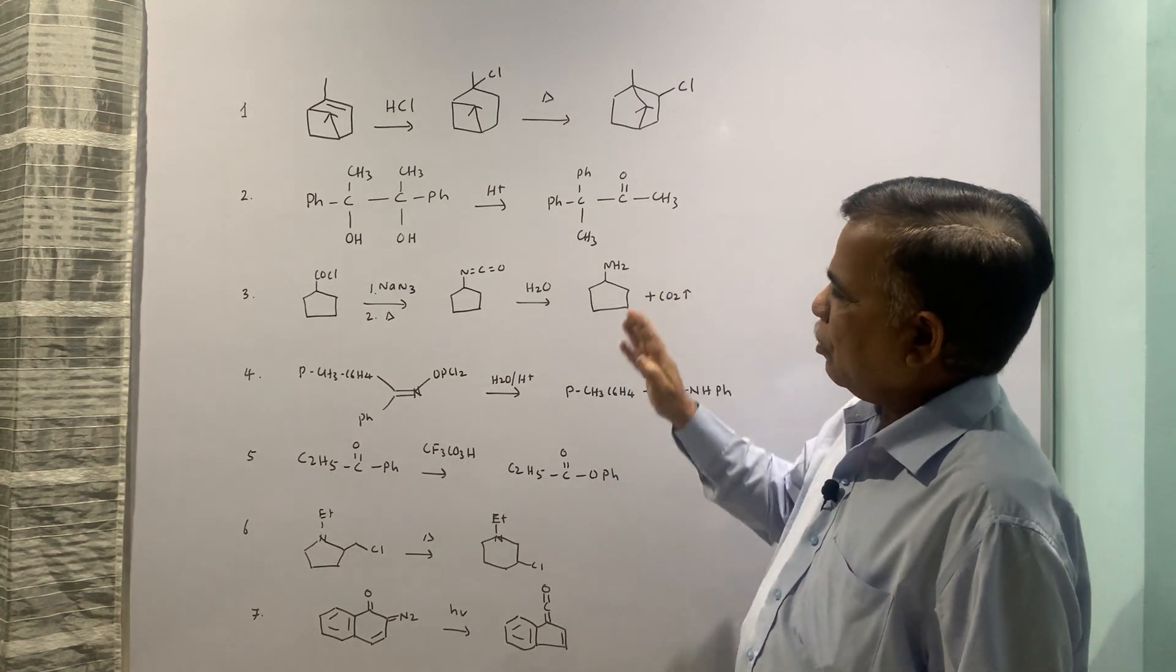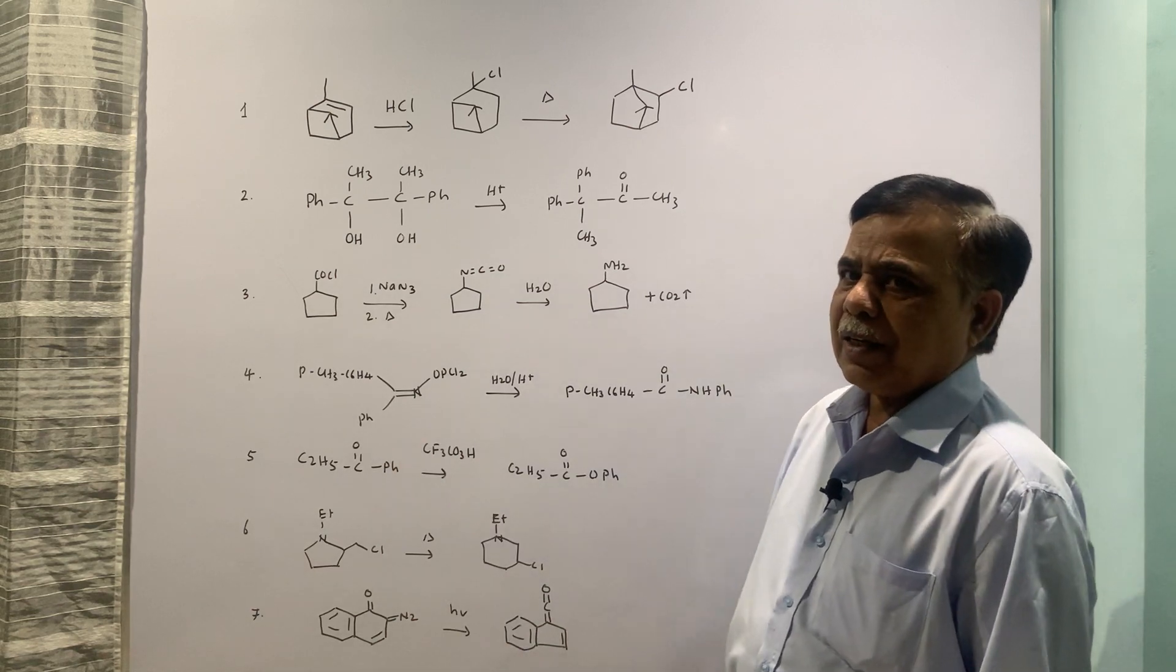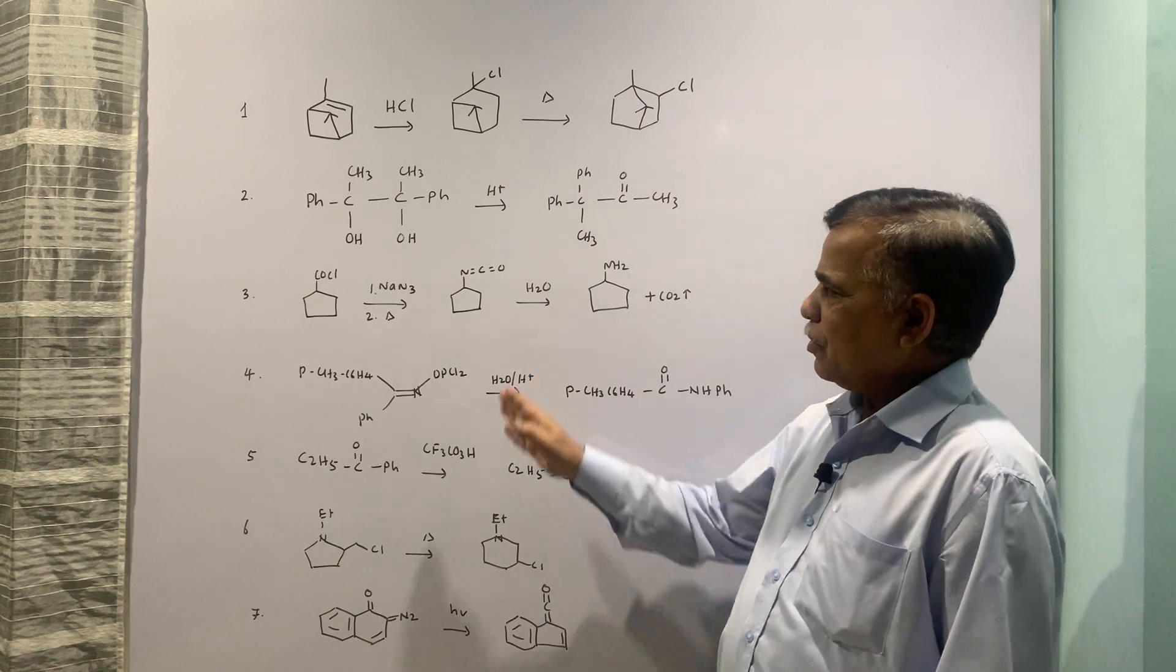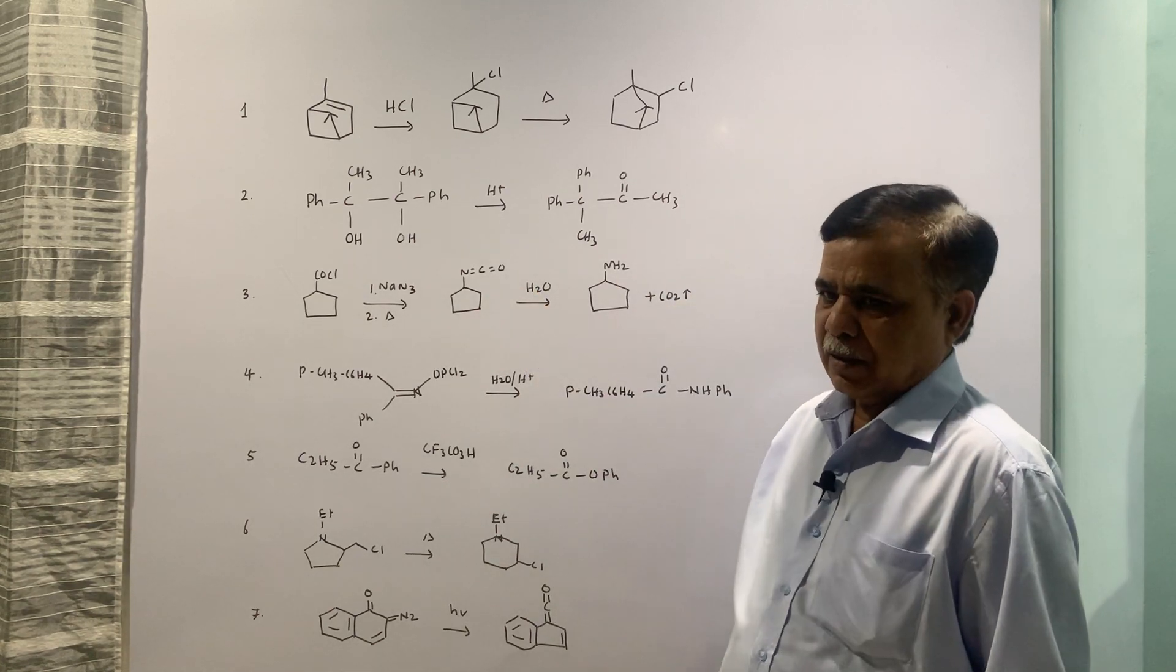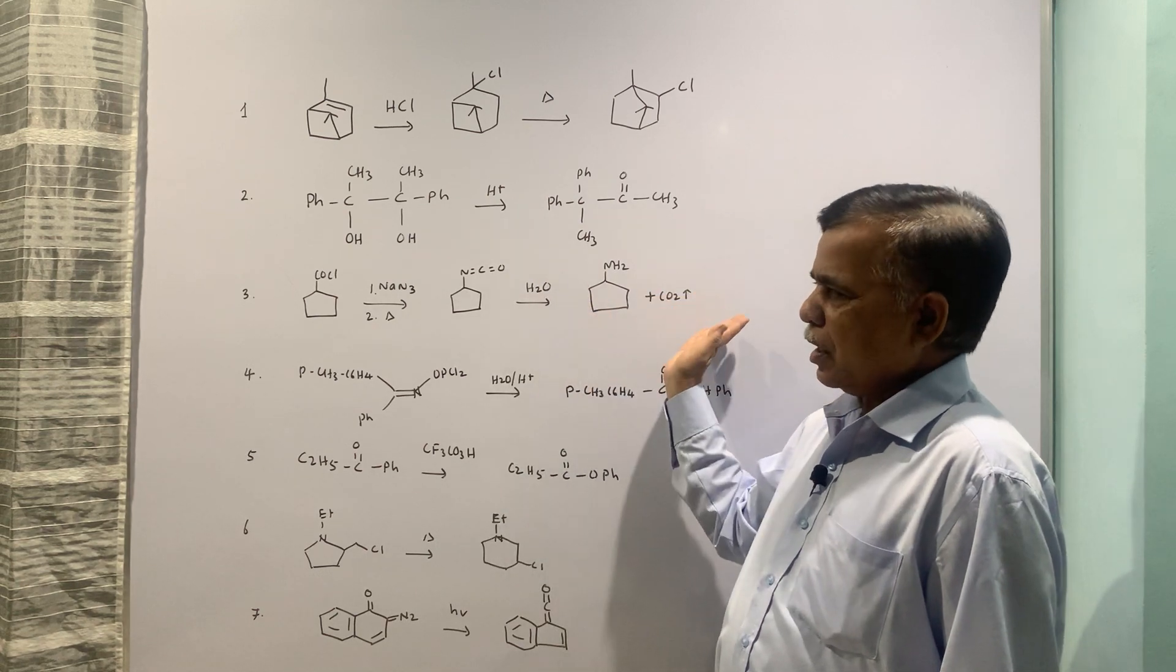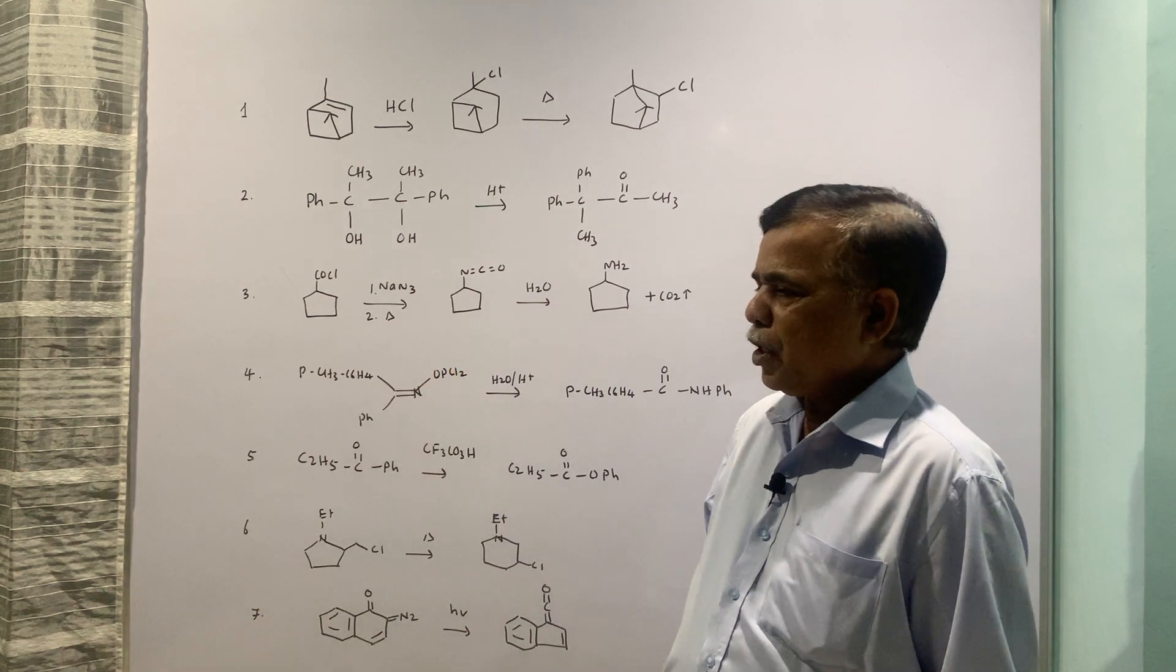This one is acid chloride and azide. So this is going to be your Curtius rearrangement. Isocyanate is there and the workup is same. Isocyanate attacked by water loses carbon dioxide and primary amine is formed.